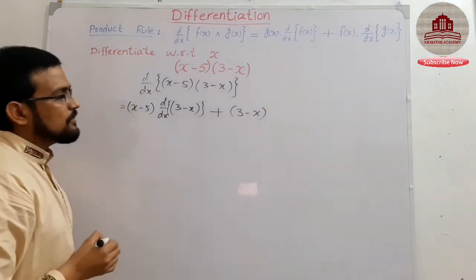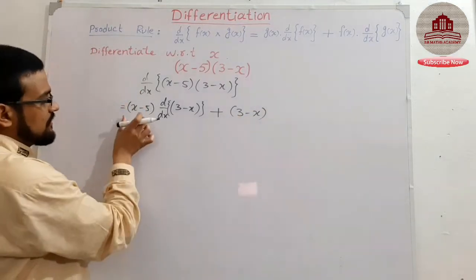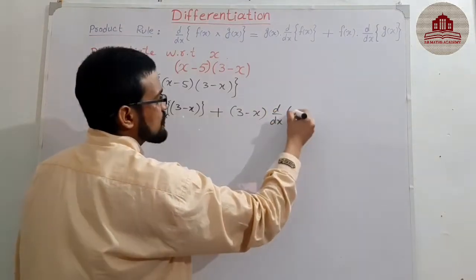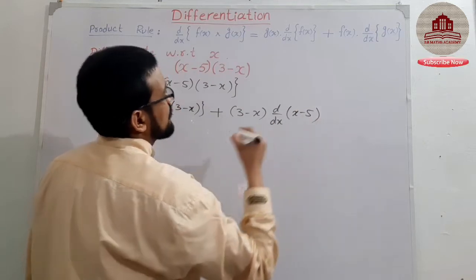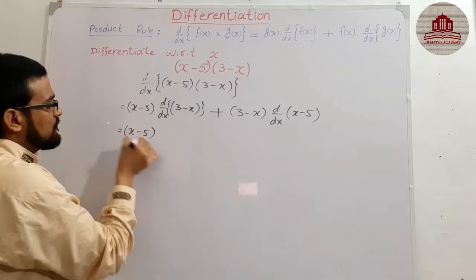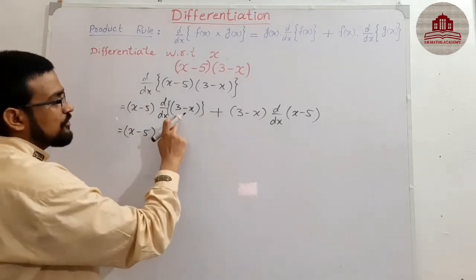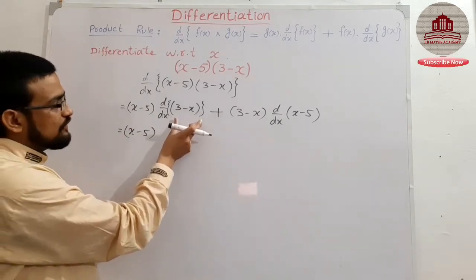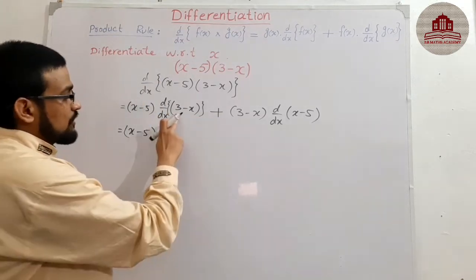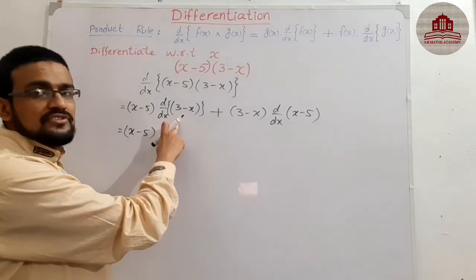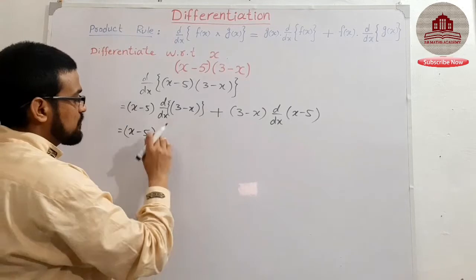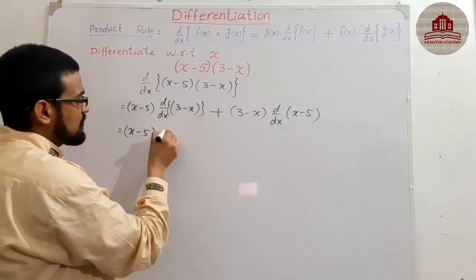x(3 - x) as it is, and derivative of second term, second function (x - 5), okay. So (x - 5) same as it is, (3 - x) derivative of (3 - x). It means in a previous lecture we discussed constant, derivative of constant is zero, and if two or more terms in sum difference form, we split into different functions.